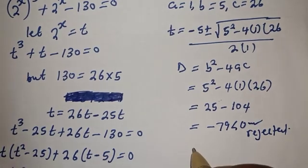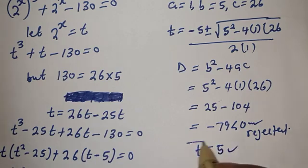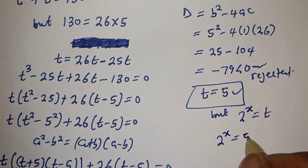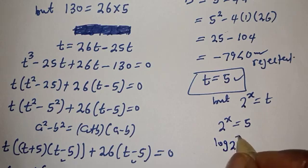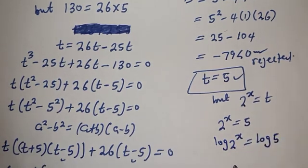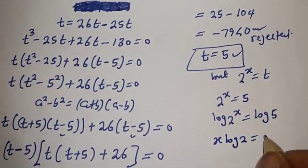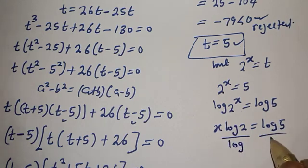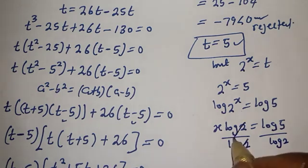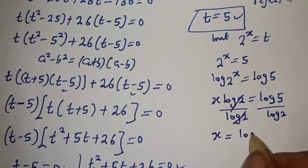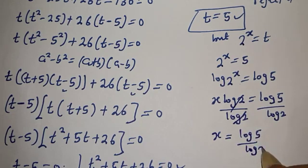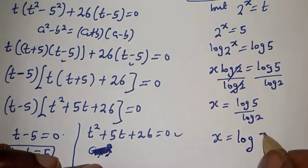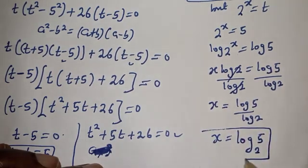The only real solution is t equals 5. But 2 raised to power s equals t, so 2 raised to power s equals 5. Taking the log of both sides: log of 2 raised to power s equals log 5, so s times log 2 equals log 5. Dividing both sides by log 2, s equals log 5 over log 2, which equals log 5 base 2. This is the final answer.